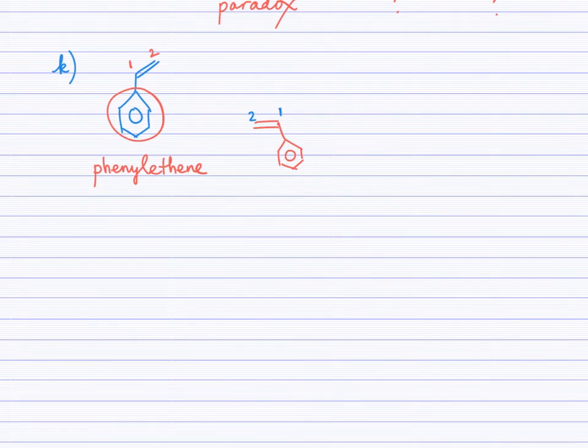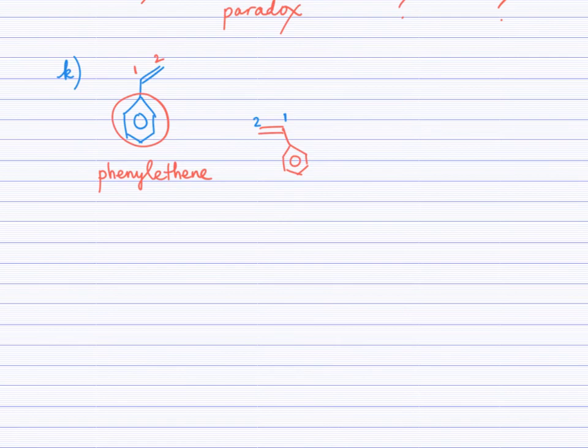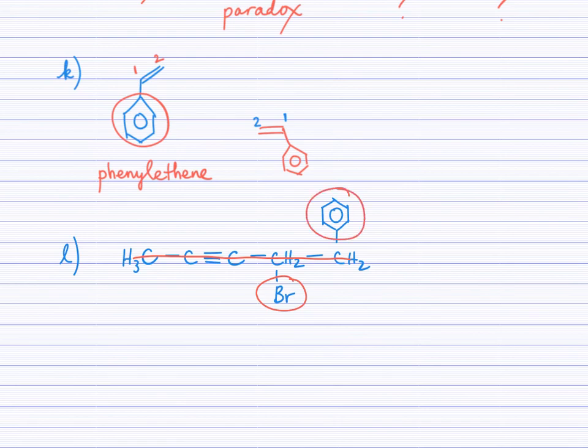Now, do we need to number where that one side group is coming off of the ethene? No, because if someone was to draw phenylethene and they chose to draw the double bond like this and then put the phenyl group off of the carbon on the right, well, we would have just numbered that as carbon number 1, 2. So really, phenylethene, definitely the one side group. The phenyl group is coming off of carbon 1. Okay, and last question is perhaps a little bit more complicated. So let's see how this goes.